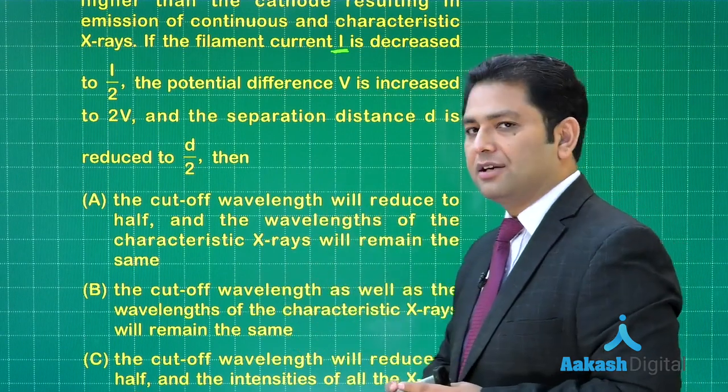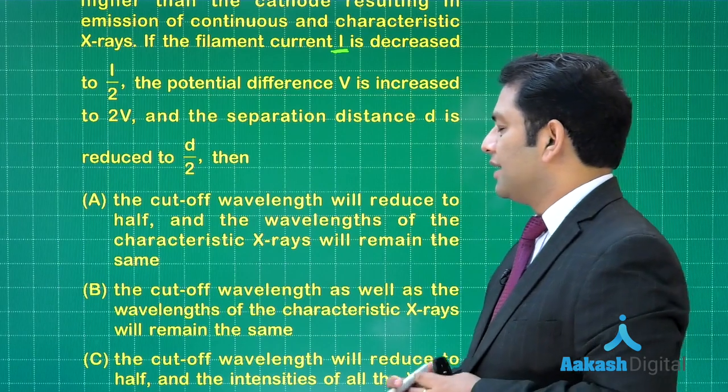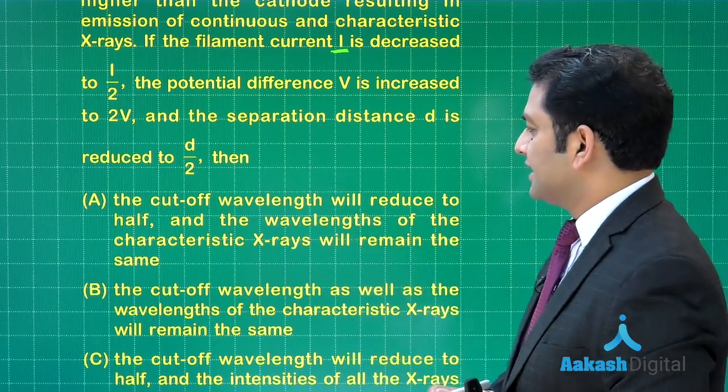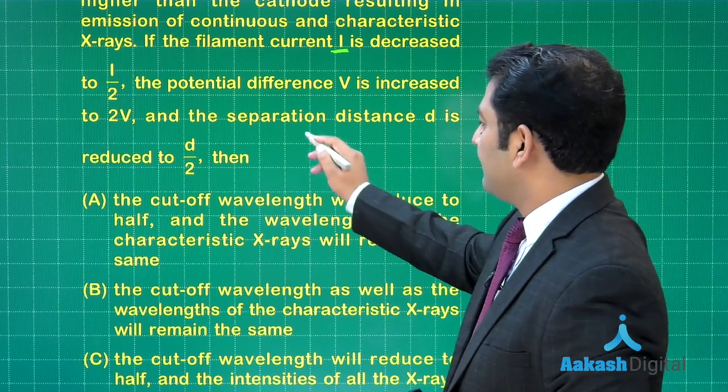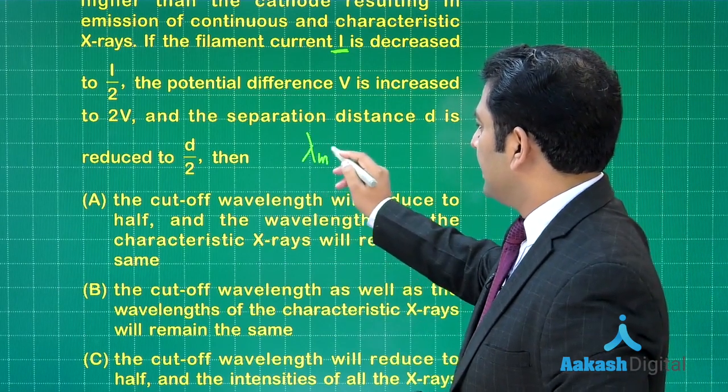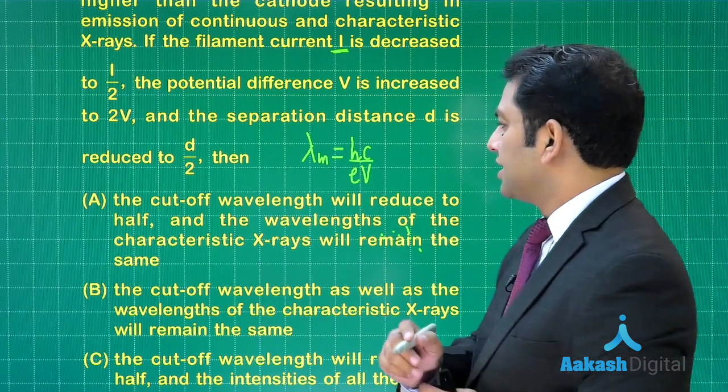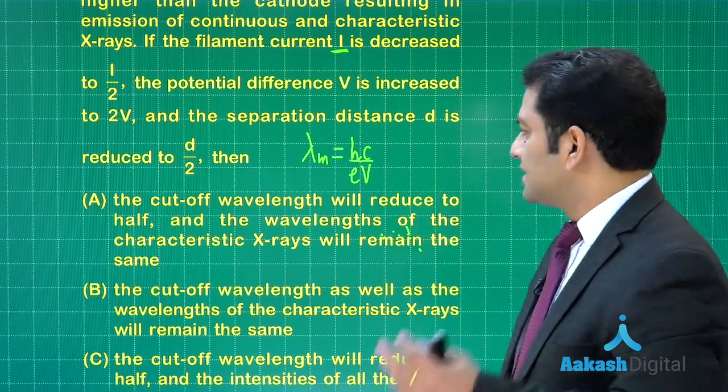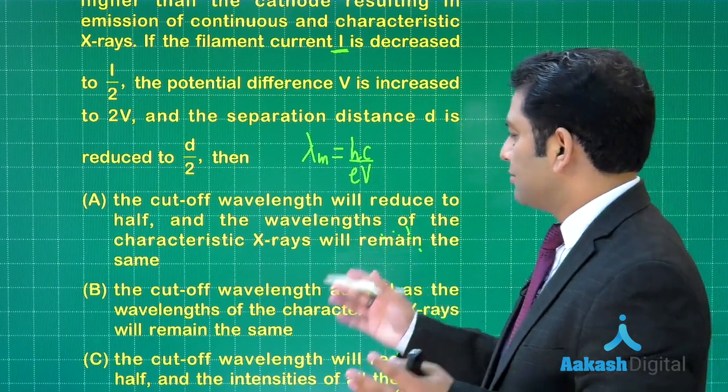What are the possible outcomes? The cutoff wavelength will reduce to half. The value of cutoff wavelength lambda m equals hc by e times accelerating potential. Because the accelerating potential is double, the cutoff wavelength has to be halved.